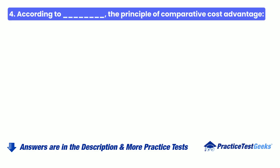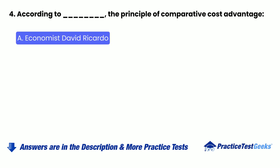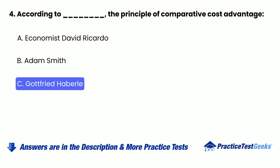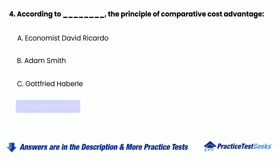Question 4: According to blank, the principle of comparative cost advantage — A. Economist David Ricardo, B. Adam Smith, C. Gottfried Haberl, D. Heckscher O'Lean.